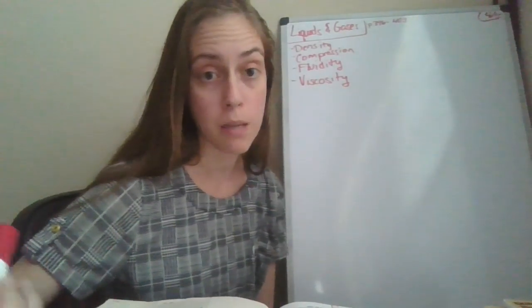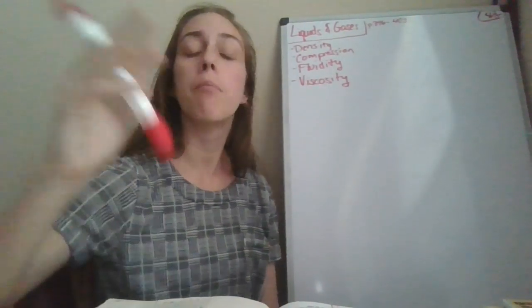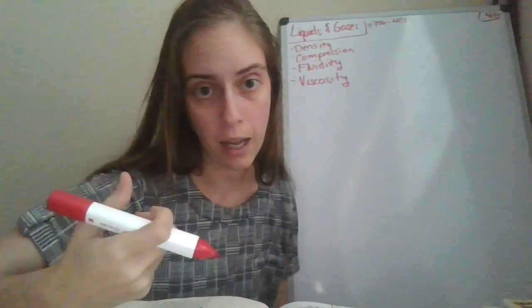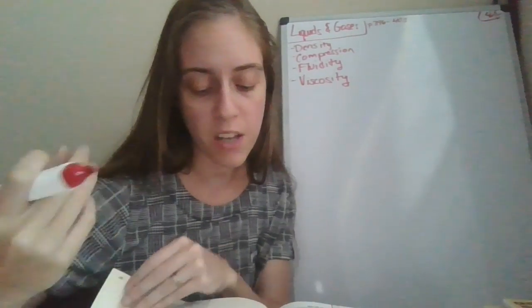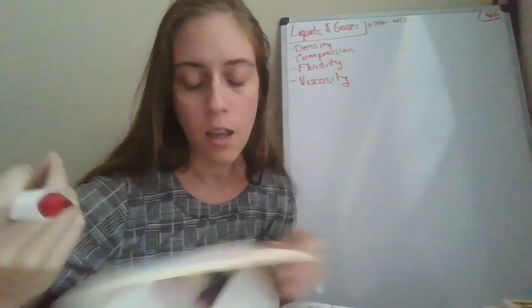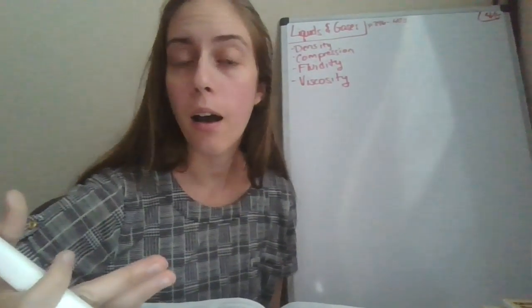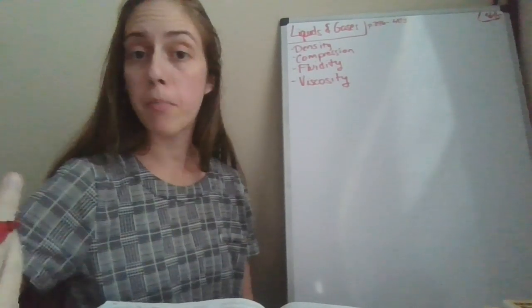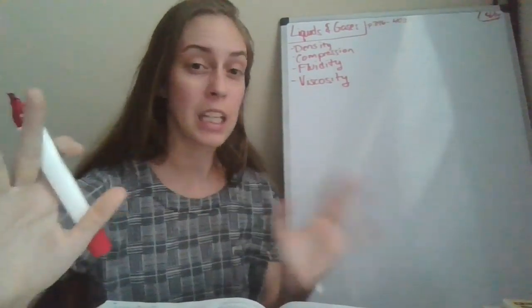Viscosity also decreases with temperature. If you've ever had a Blizzard from Dairy Queen, they can turn it upside down and it doesn't spill out — because it's so cold that it's very viscous. But as it warms up and starts to melt, it becomes less viscous. So with that said, hopefully viscosity makes sense.